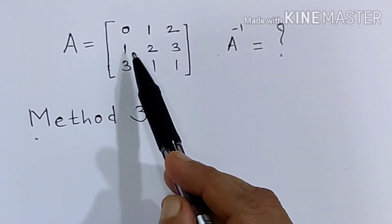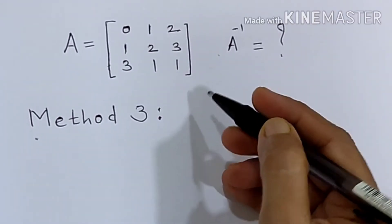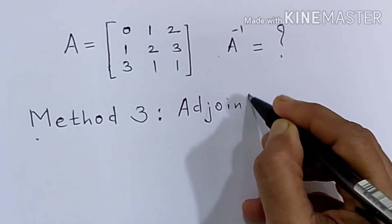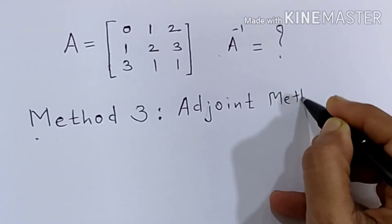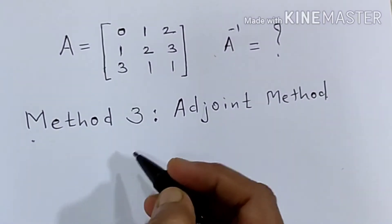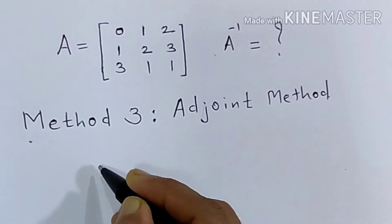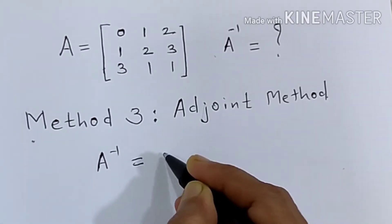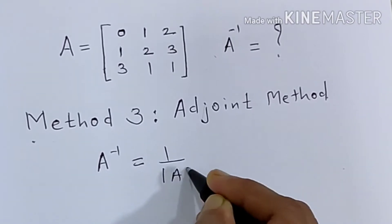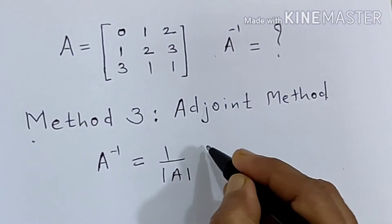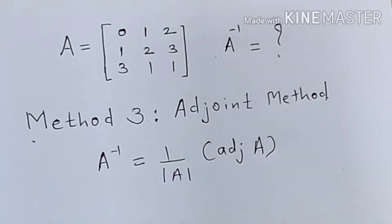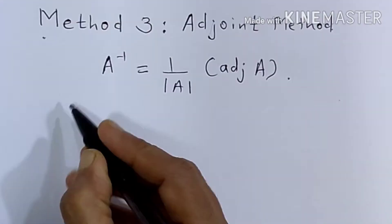Finding the inverse of this matrix using the adjoint method. The formula to find A inverse using the adjoint method — this is the third method we are going to discuss — is: A inverse is equal to 1 upon determinant of A, into the adjoint of matrix A.